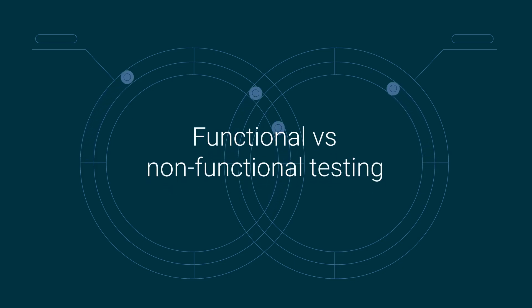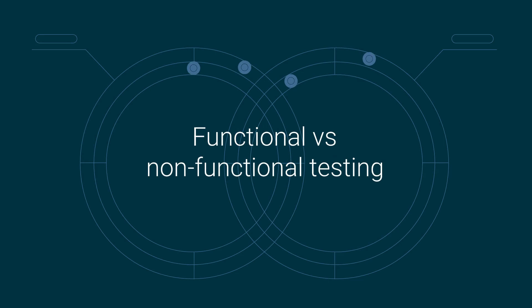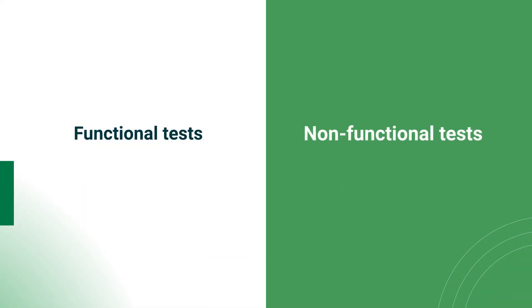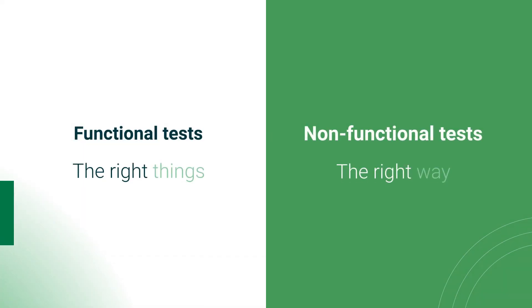Functional testing and non-functional testing are both crucial components of a comprehensive software testing process. Functional tests confirm that the code is doing the right things, while non-functional tests validate that the code is doing things the right way.